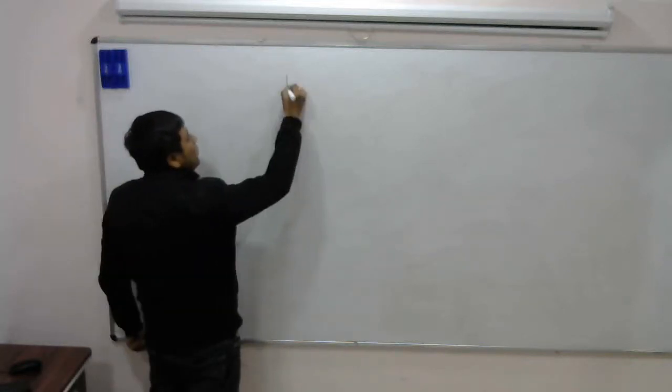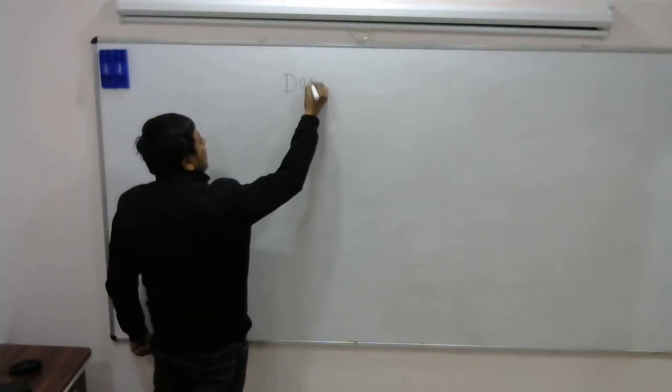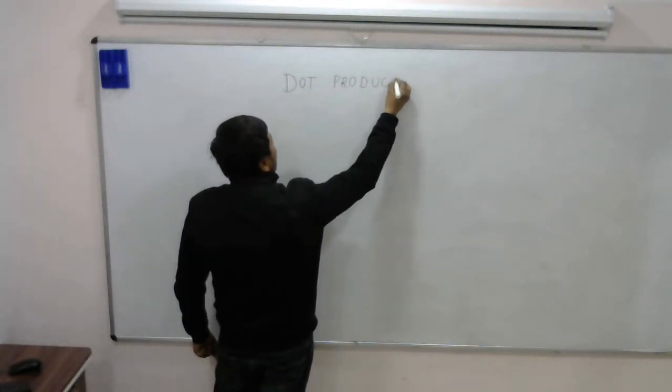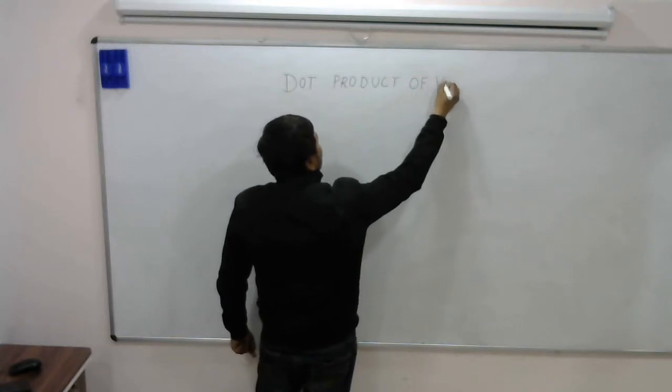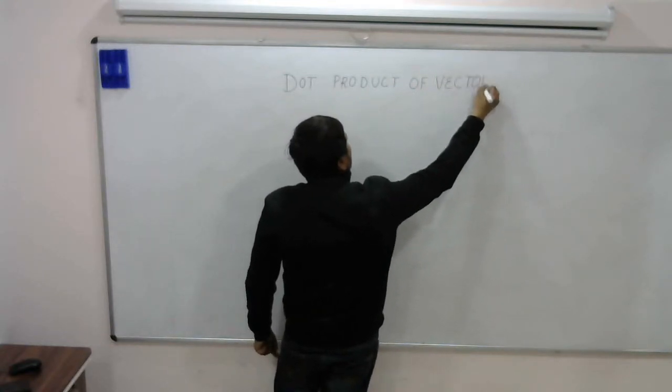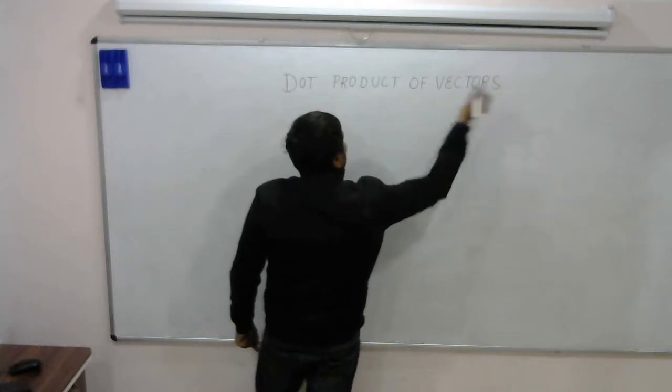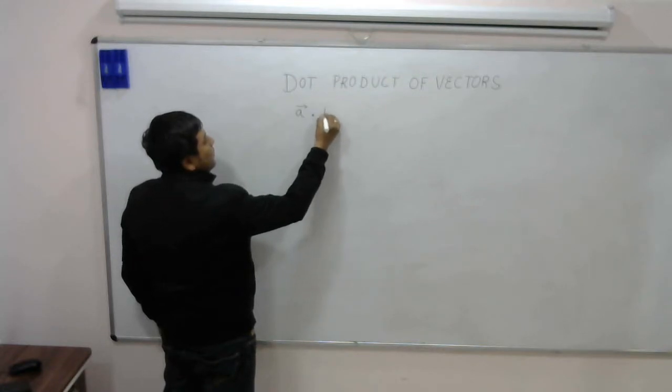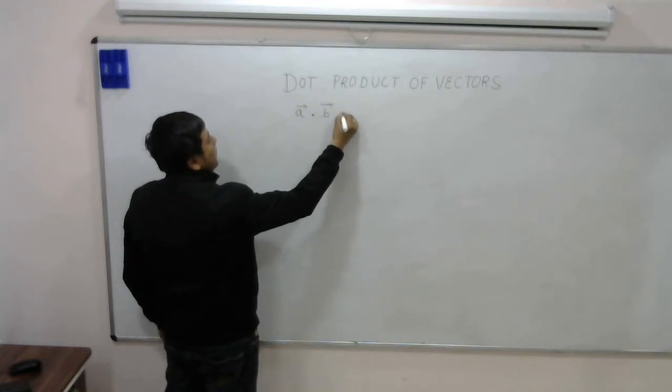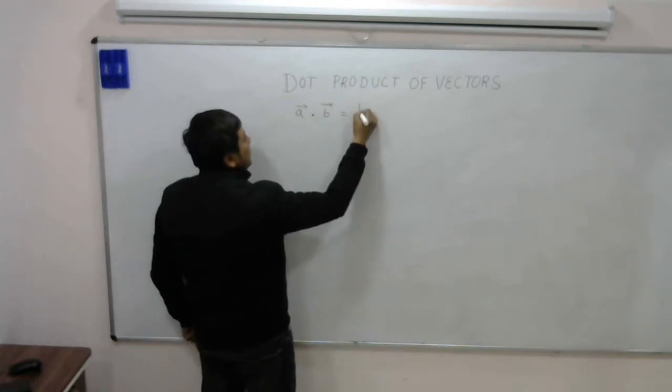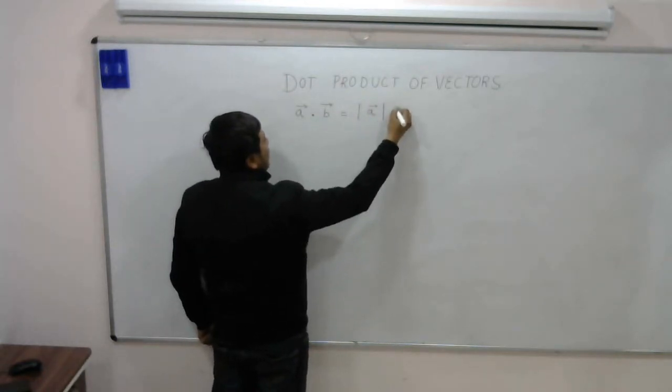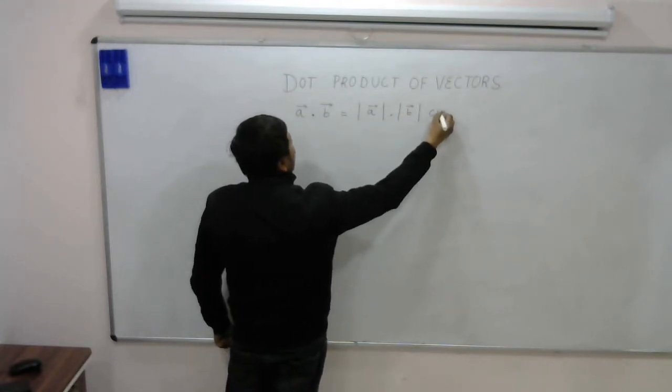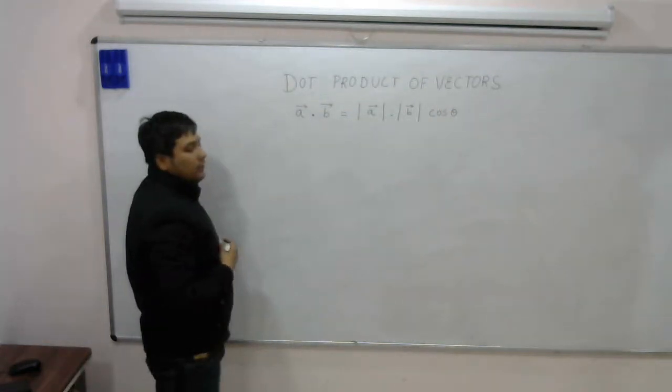Today we will do dot product of vectors. Dot product is defined as A vector dot B vector, and its formula is magnitude A into magnitude B into cos of the angle between the two vectors.